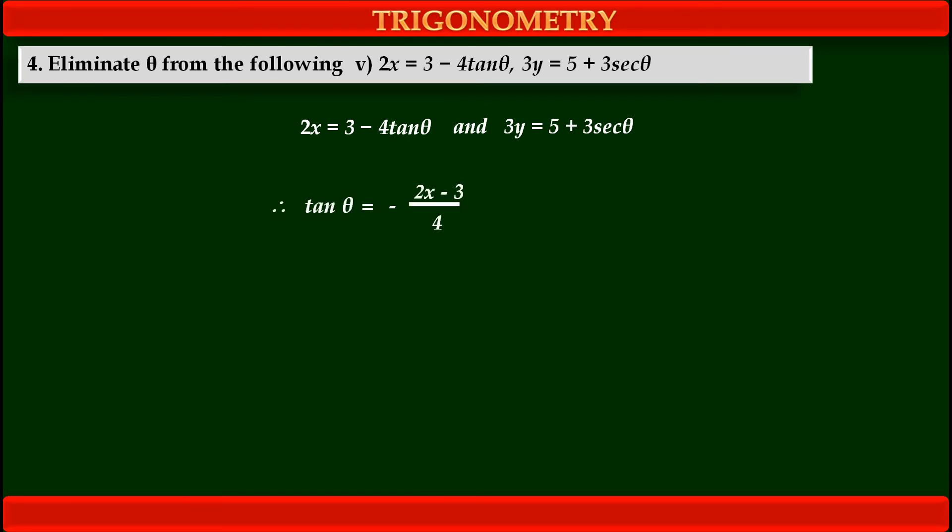From first equation, we get tan theta equals minus 2x minus 3 upon 4. Because the term is given minus 4 tan theta, we have to use minus sign first. We have to shift 3 to the left hand side so it becomes negative and dividing both sides by 4. That's why it is 2x minus 3 upon 4 with negative sign.